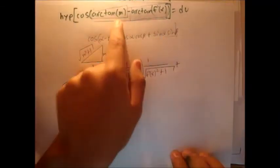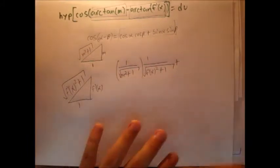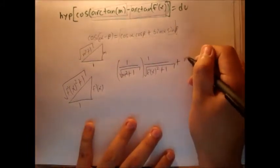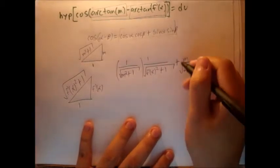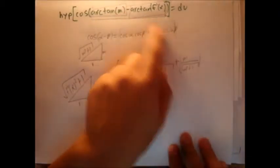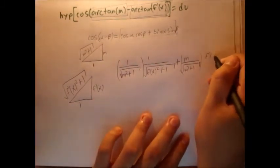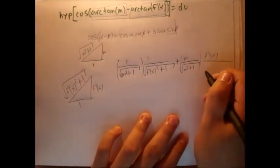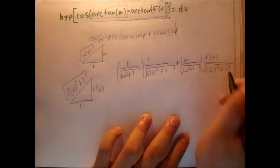Now we have to do plus sine of alpha right here. So sine of alpha is just going to be opposite over hypotenuse. That's simply going to be m over square root of m squared plus 1. And then the last part, sine of beta, sine of arctangent, is simply going to be f prime of x divided by square root f prime of x squared plus 1.